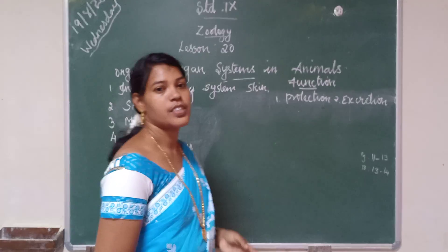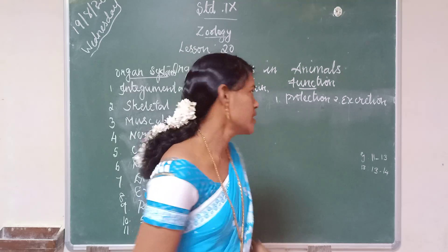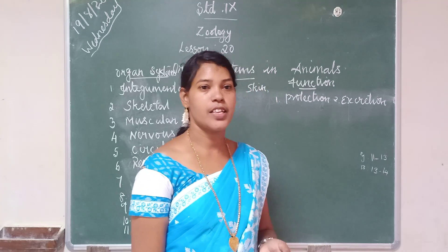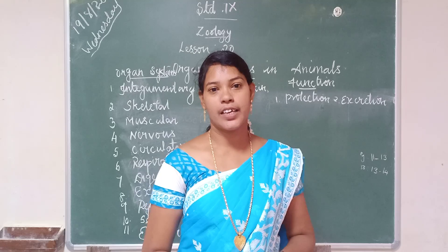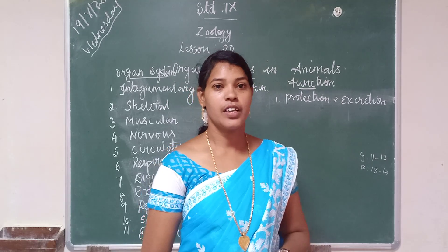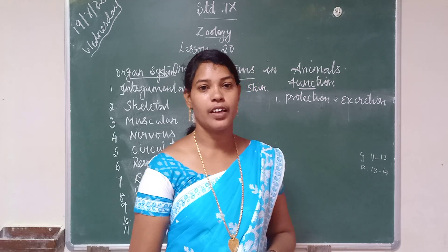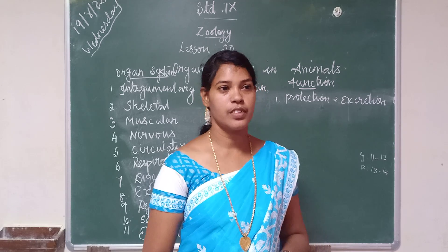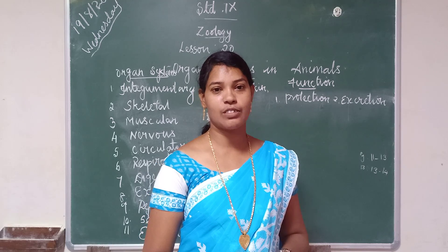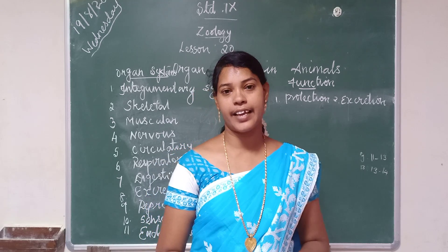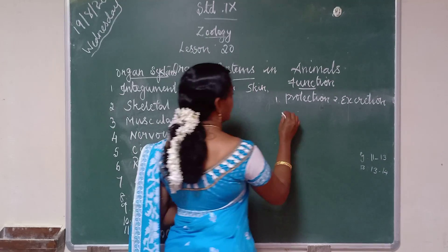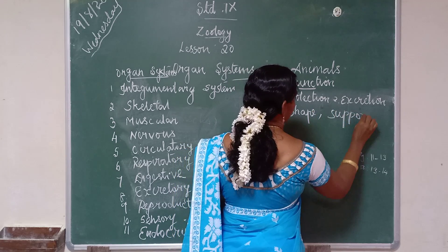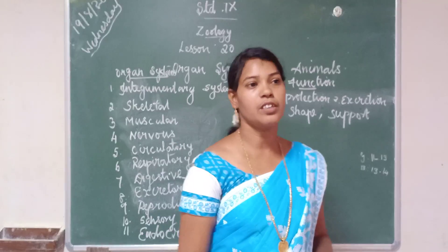The second one is the skeletal system — skeletal system means bones. The organs are skull, vertebral column, sternum, girdles, and limbs. The skull is in the head region and the brain is accommodated inside it. The vertebral column is the backbone, sternum is the chest bone, girdles are the hip and shoulder bones, and limbs are legs and arms. Its function is to give shape and support to our body.